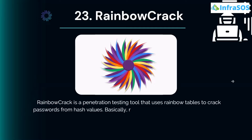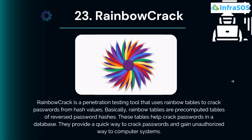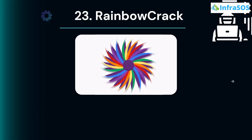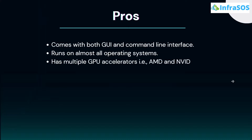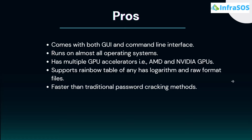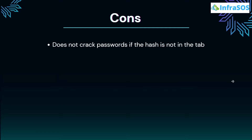At number 23 we have RainbowCrack. RainbowCrack is a penetration testing tool that uses Rainbow Tables to crack passwords from hash values. Rainbow Tables are pre-computed tables of reverse password hashes that help crack passwords in a database and provide a quick way to gain unauthorized access to computer systems. Major pros include both GUI and command line interfaces, running on almost all operating systems, and being faster than traditional password cracking methods. Cons include inability to crack passwords if the hash is not in the table and huge RAM and storage requirements.